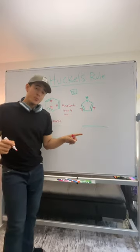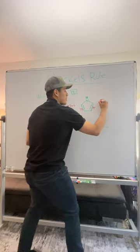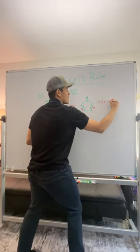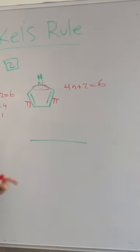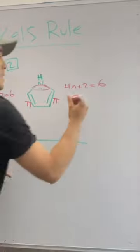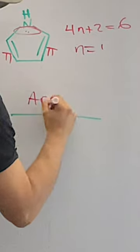Let's try the same principle over here. 4n plus 2 equals the number of pi electrons. In this case again I'm going to count this lone pair because it's part of the conjugated system. So we get n equals 1.